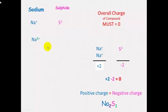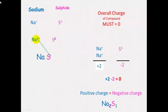Using the cross method for sodium sulfide: write sodium and sulfide with their charges. For the number of sulfide ions needed, look at the valency on the sodium, which is 1, so you need 1 sulfide ion. For the number of sodium ions, look at the valency on the sulfide, which is 2, so you put a little 2 next to the sodium. This confirms you need 2 sodium and 1 sulfide.